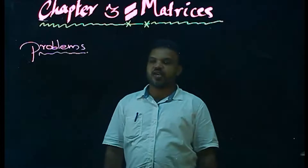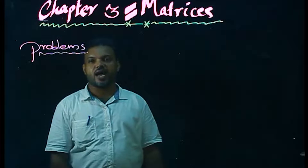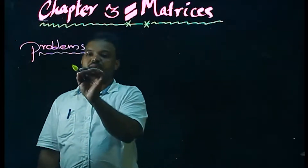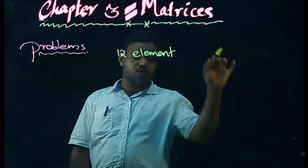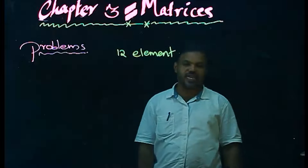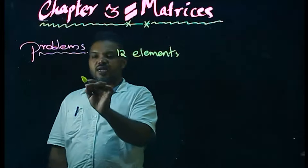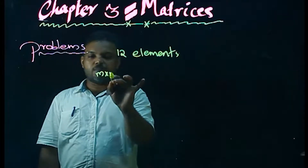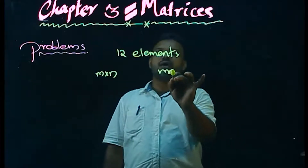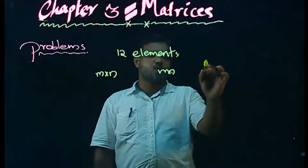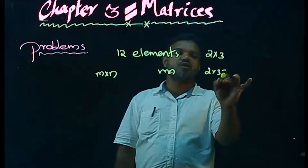If a matrix has 12 elements, what are the possible orders it can have? A matrix of order M by N has MN elements. For example, a matrix of order 2 by 3 has 2 times 3 equals 6 elements. So if a matrix has 12 elements, we need to find all pairs M and N such that M times N equals 12.